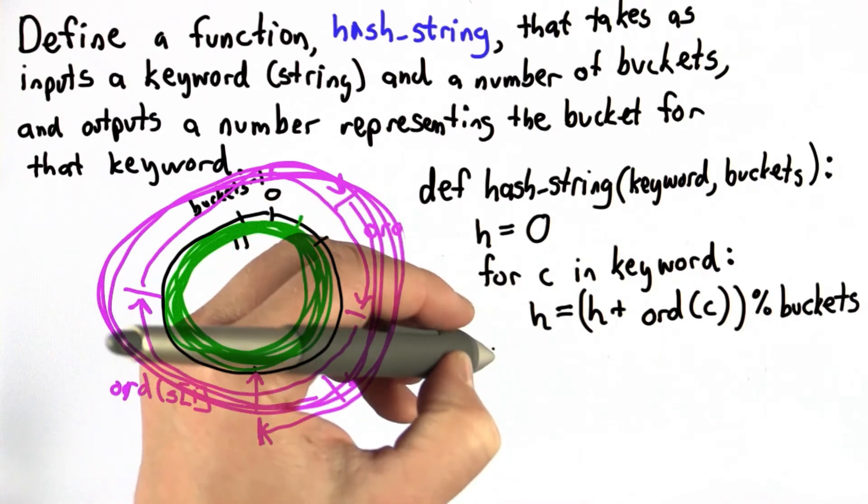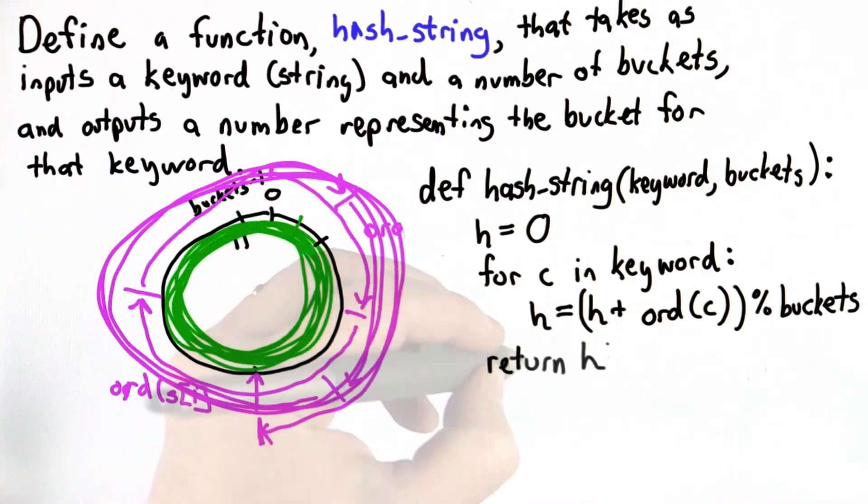And then at the end, we're going to return the hash value. We could instead of doing the modulo each time here, do the modulo just once at the end. That would be computing a big number if we have a really big string, and then at the end, compute it modulo buckets. Either way should work.